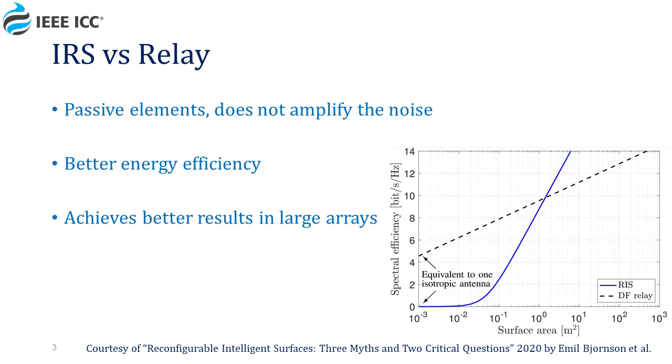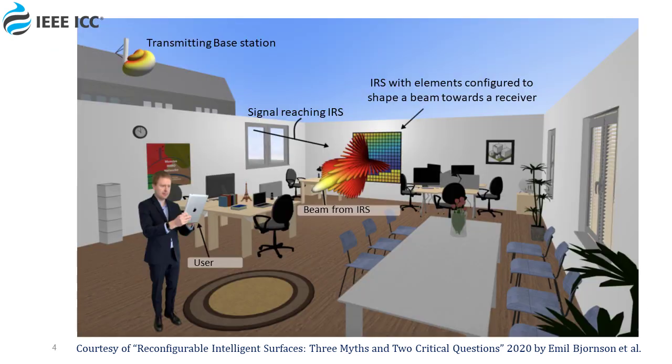Apart from that, the element in the IRS being passive also contributes to lower energy consumption. In this figure, you can see the system model. The user does not have a line of sight for the transmitter, but the IRS directs the transmitted signal beam directly to him.